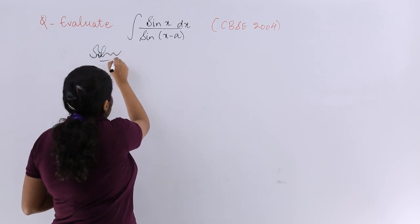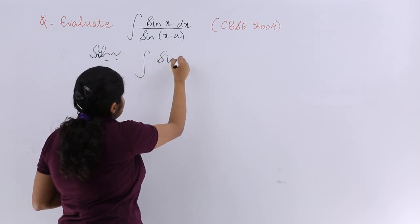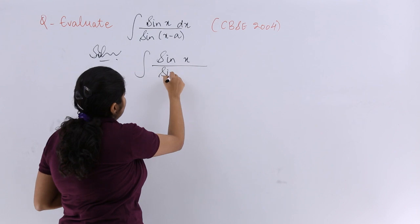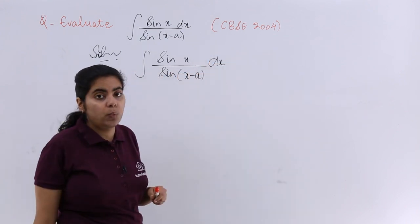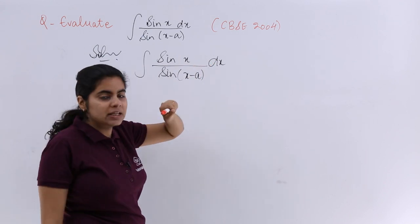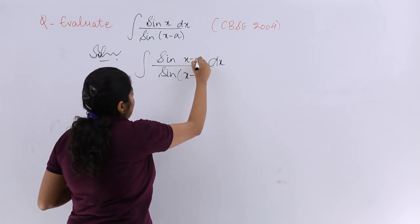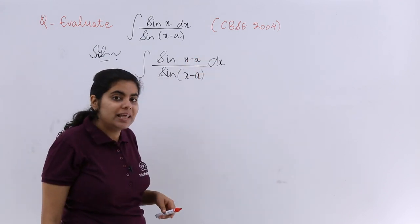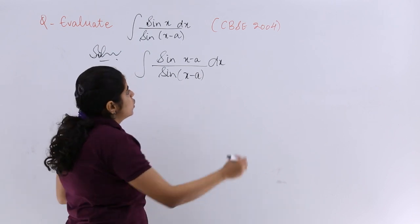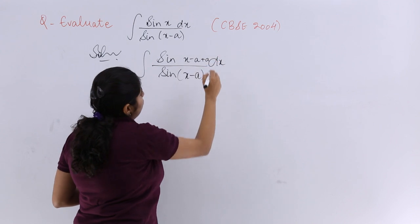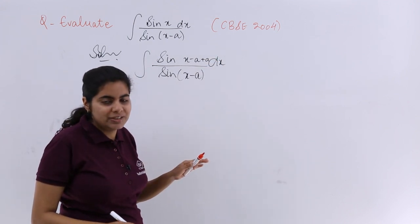I write solution. The question is sin x in the numerator while sin(x-a) in the denominator. Now if I want x minus a in the numerator I can by subtracting a, but then the effect also has to be cancelled by adding a. So I add a also.